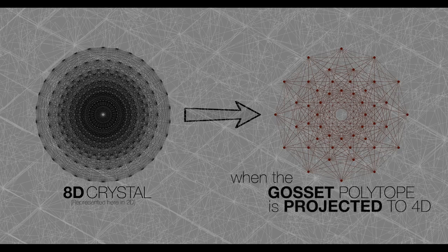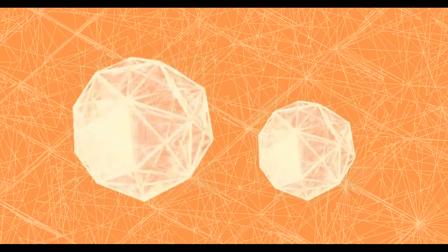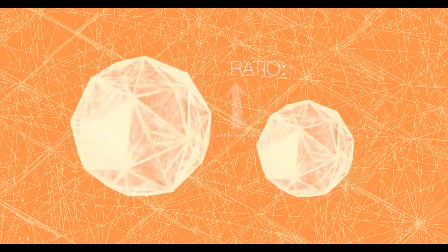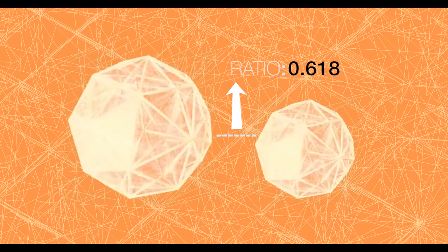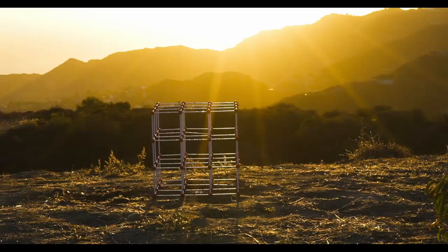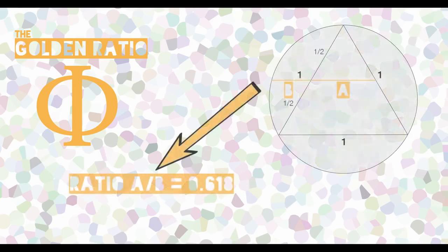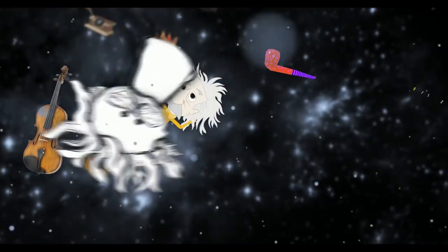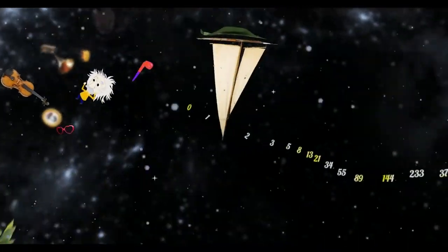When the Gossett polytope is projected to 4D, it becomes two identical shapes of different sizes. The ratio of their sizes is a unique number: 0.618, also known as the Golden Ratio. The Golden Ratio may be the fundamental constant of nature — it is fundamental to circumscribed equilateral triangles and weirdly ubiquitous in the universe, appearing everywhere from the quantum to celestial scales.